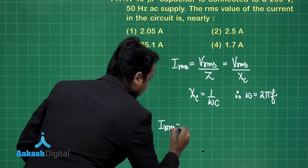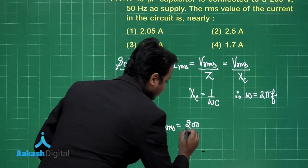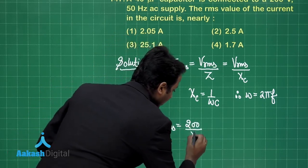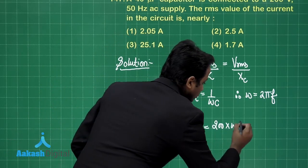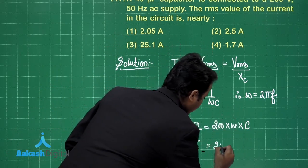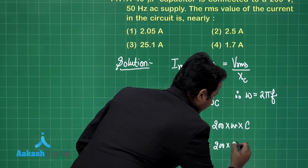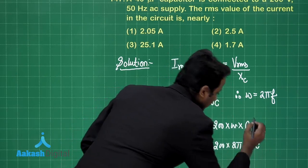So, RMS value of current will be 200 divided by XC. So, this will be 200 into omega into C. So, this is 200 into 2 pi frequency into capacitance.